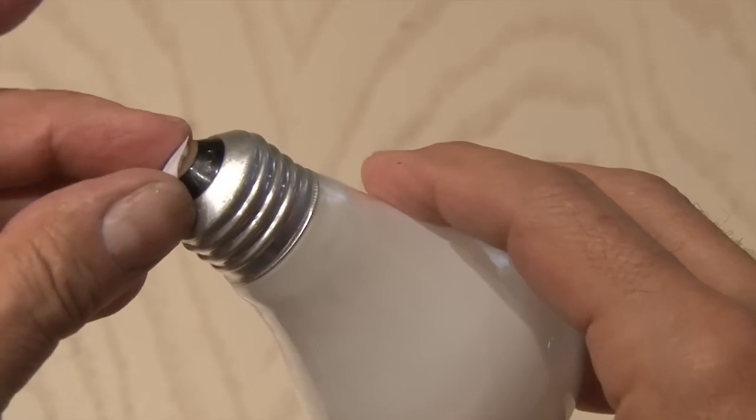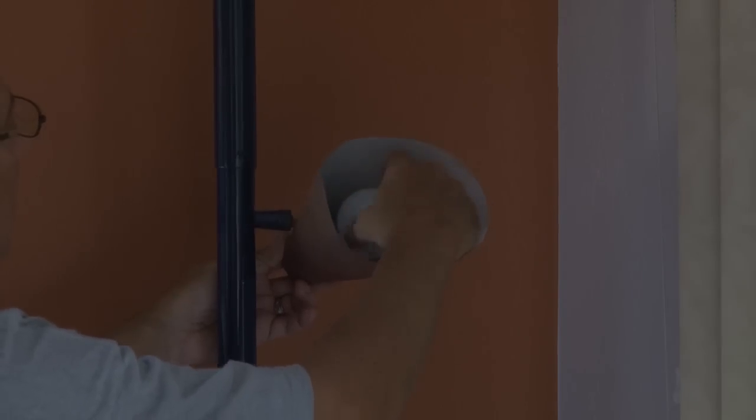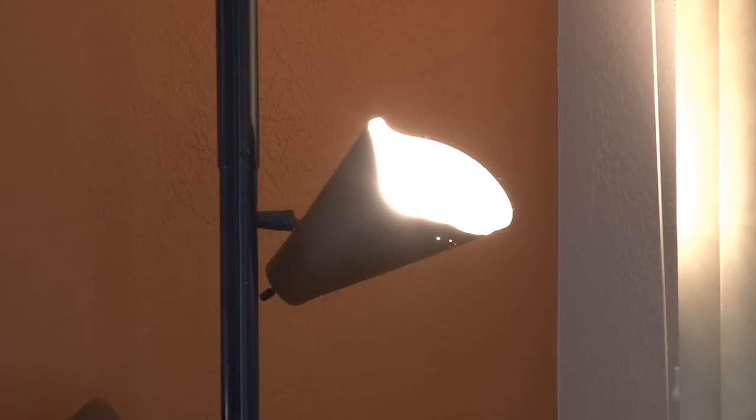Then take that wet dot and stick it on the end of the light bulb. Carefully screw the light bulb back in the fixture. The next time the light is turned on, it'll work normally for a while.